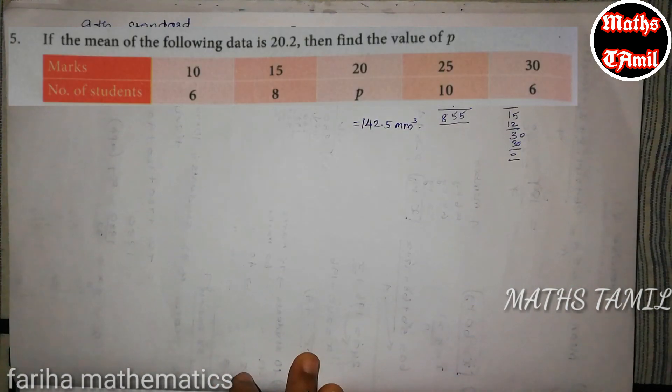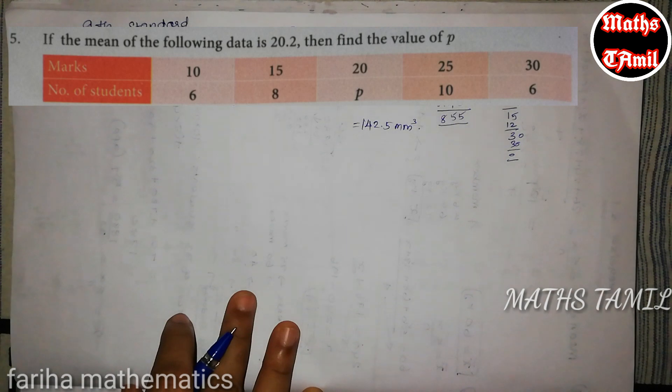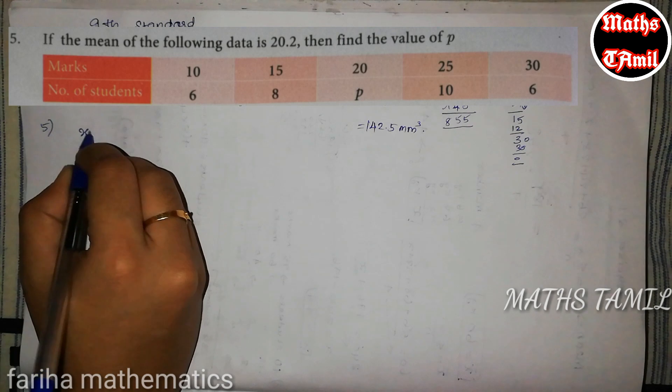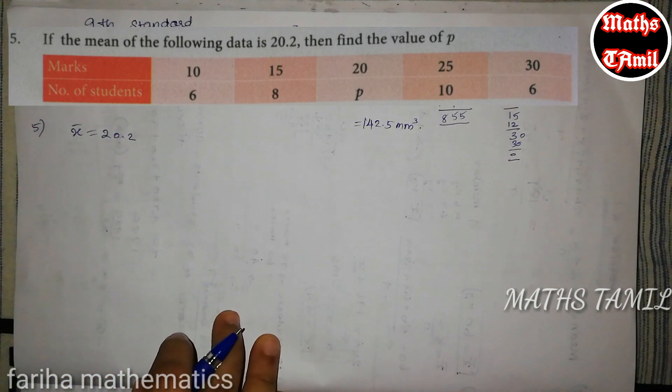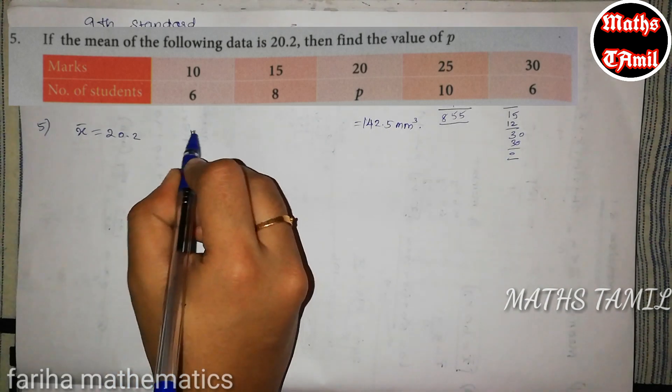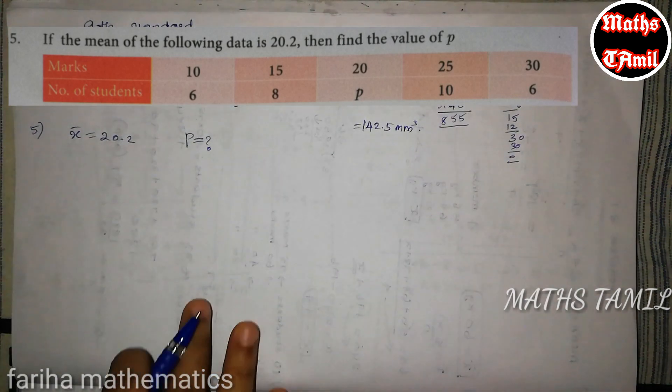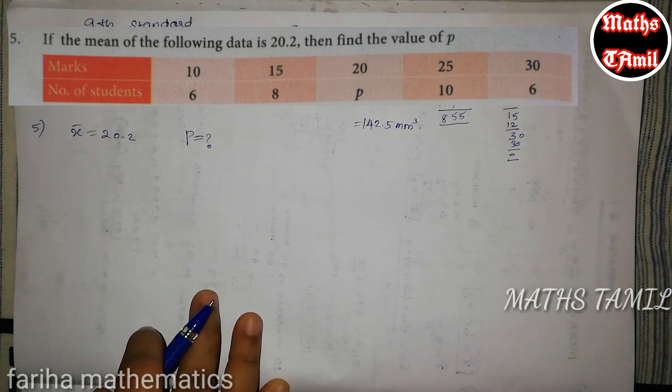Now we have the question. If the mean of the following data is 20.2, then find the value of P. P is the value we find. So marks are number of students.